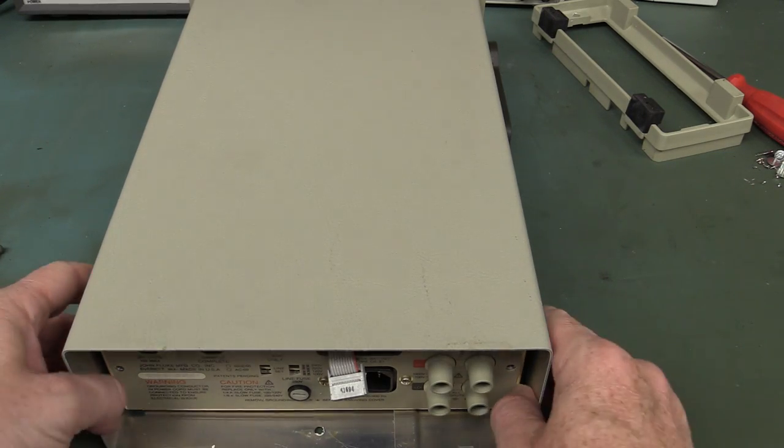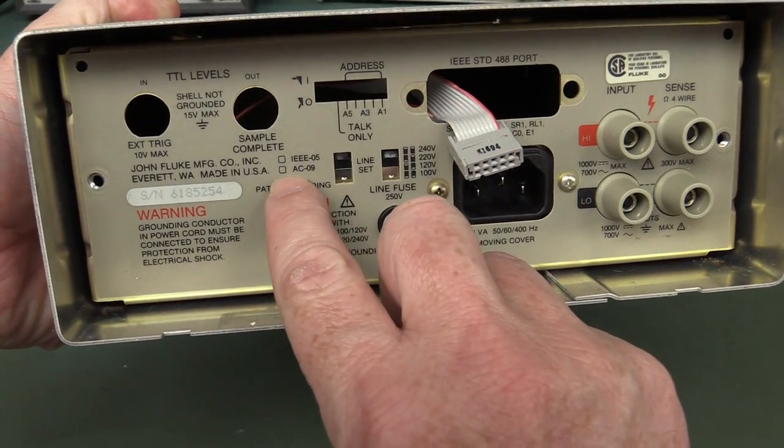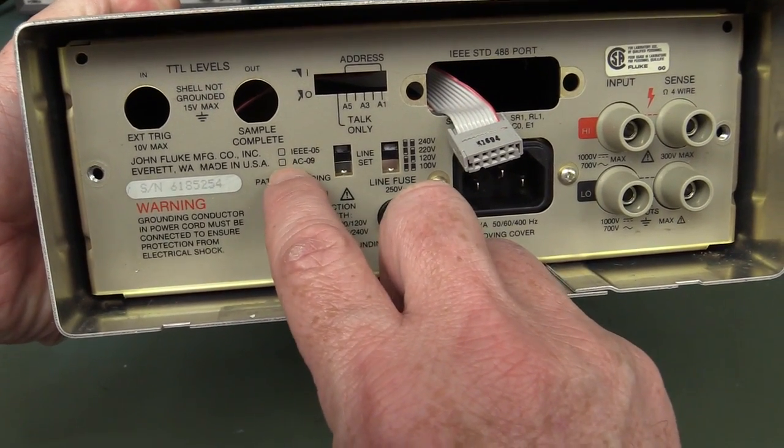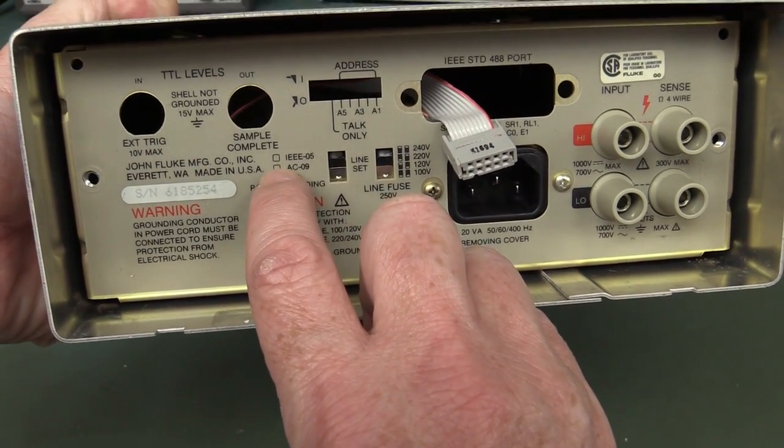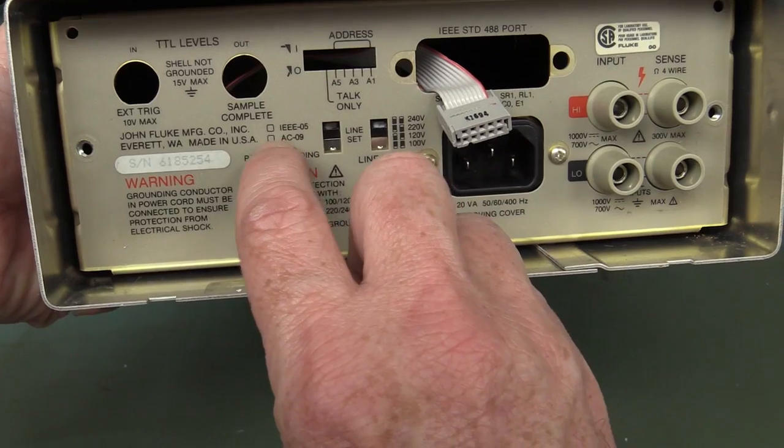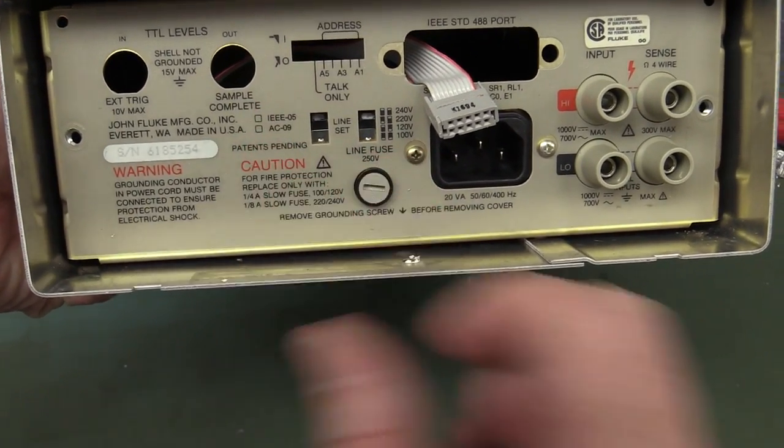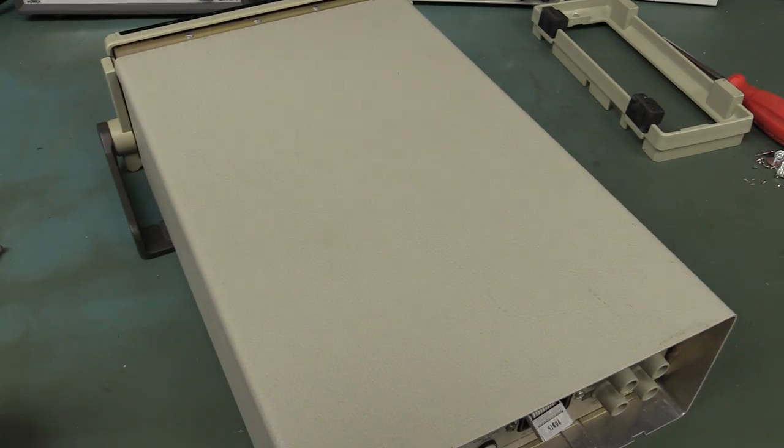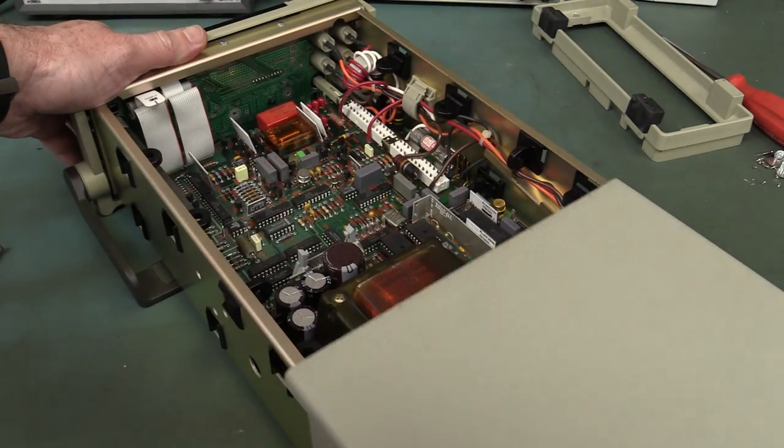So it turns out that that's actually option 09. So if you're buying one of these things, there it is there, the AC 09. If you can get a photo of the back of the thing, make sure it has that ticked. Otherwise, they put a marker pen or something there at the factory. Make sure that's ticked. Otherwise, you're not going to be actually able to measure. It's not just true RMS. You're not going to have any AC voltage or current measurement at all. A bit of a show stopper. Anyway, let's open it.